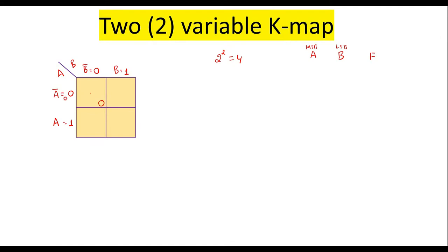In the first row, second column, A is 0 and B is 1, giving 01, so the cell number is 1. Next, A is 1 and B is 0, that is 10, so the cell number is 2 in decimal. And 11 is equivalent to 3, so the cell number of that cell is 3. So the cell numbers or minterms for the four cells are 0, 1, 2, and 3. To make simplification easy, it is good practice to write cell numbers in decimal.